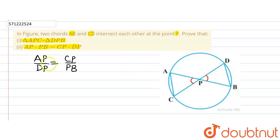So we can write that angle APC equals angle DPB because they are vertically opposite angles.